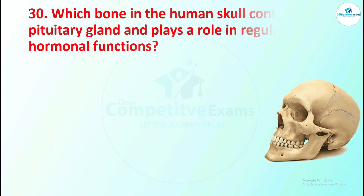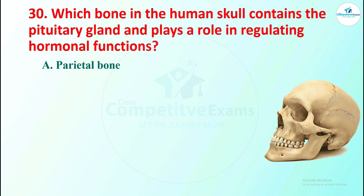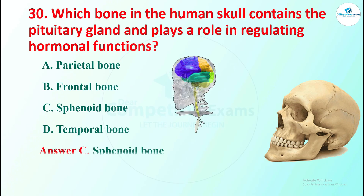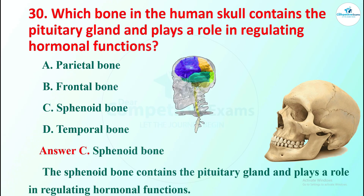Question 29: which bone in the human skull contains the pituitary gland and plays a role in regulating hormonal functions? Options are parietal bone, frontal bone, sphenoid bone, or temporal bone. The correct answer is sphenoid bone. The sphenoid bone contains the pituitary gland and plays a role in regulating hormonal functions.